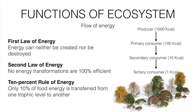Only 10% of food energy is transferred from one trophic level to another — about 90% is wasted. For example, if a producer has 1000 kilocalories, the primary consumer will have only 100 kilocalories, the secondary consumer will have 10 kilocalories, and the tertiary consumer will have only 1 kilocalorie.